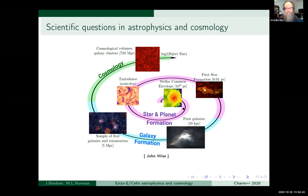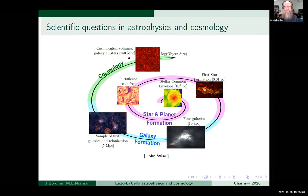I'm working on Enzo-E and Cello, which shows some of the types of problems that astrophysicists are interested in. These are visualizations of simulations by Enzo, the parent application of Enzo-E. There's a very wide variety with different physics being more prominent in some than others. These range over scales from binary stars modeled at box sizes of about a microparsec, up through first stars, early galaxies, galaxy formation, and cosmological structure formation with box sizes of almost a billion parsec.